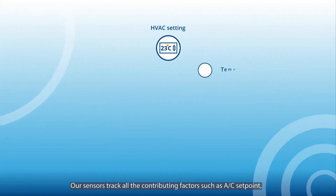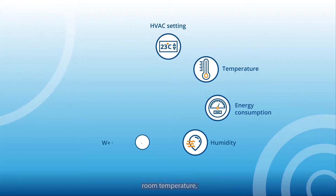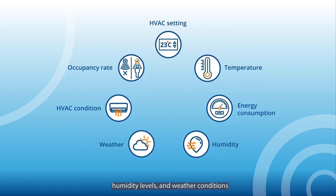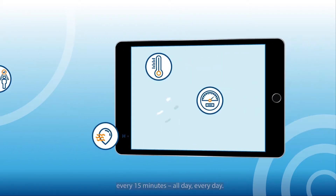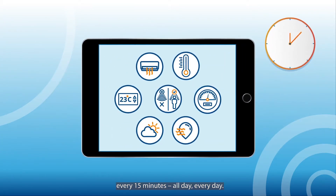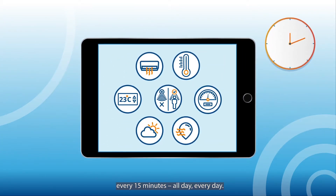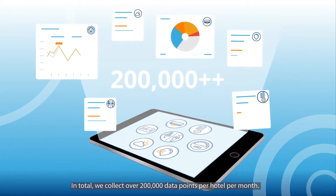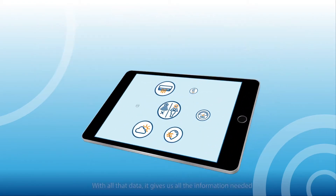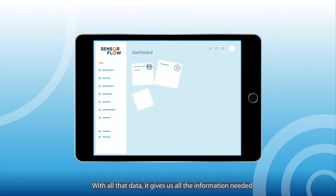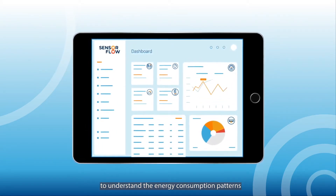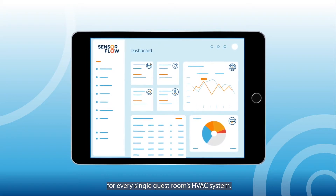Our sensors track all the contributing factors, such as AC setpoint, room temperature, actual energy consumption, humidity levels, and weather conditions, every 15 minutes, all day, every day. In total, we collect over 200,000 data points per hotel per month. With all that data, it gives us all the information needed to understand the energy consumption patterns for every single guest room's HVAC system.